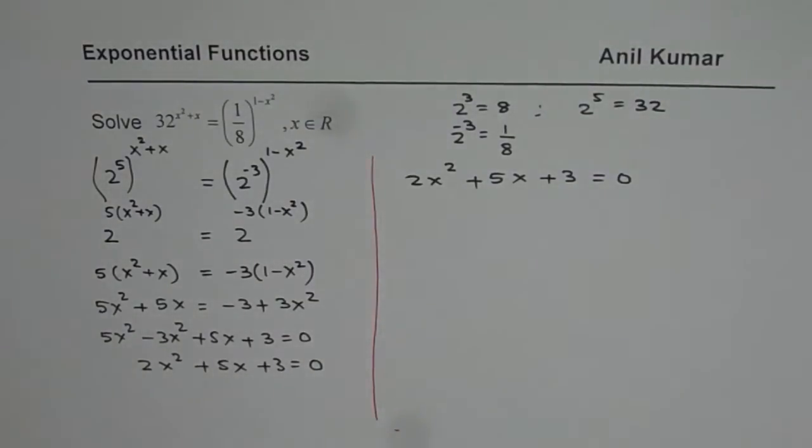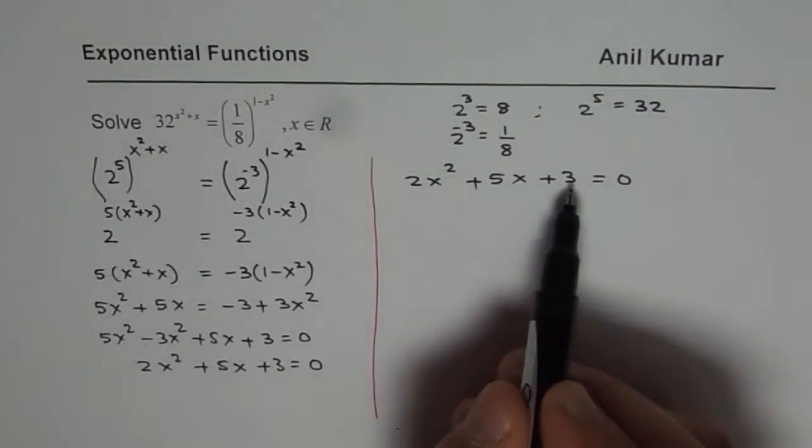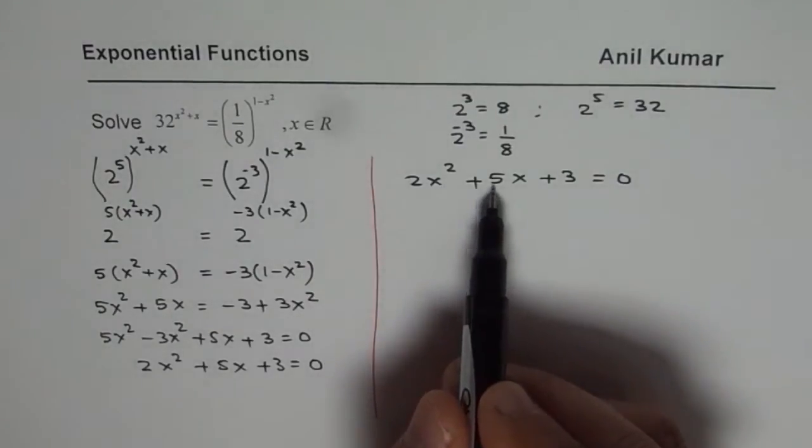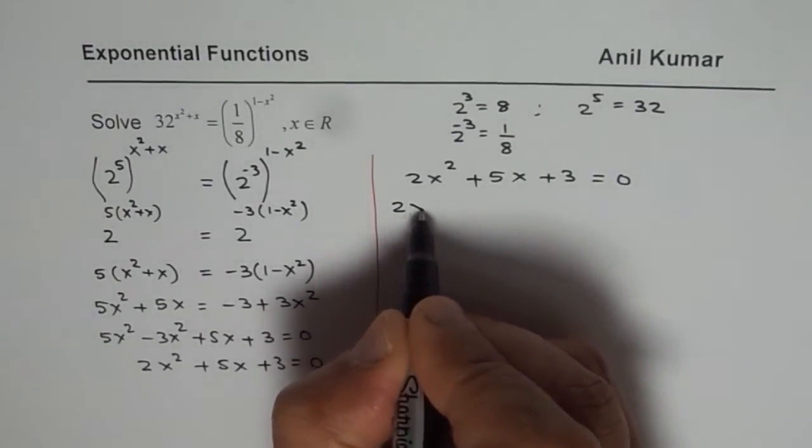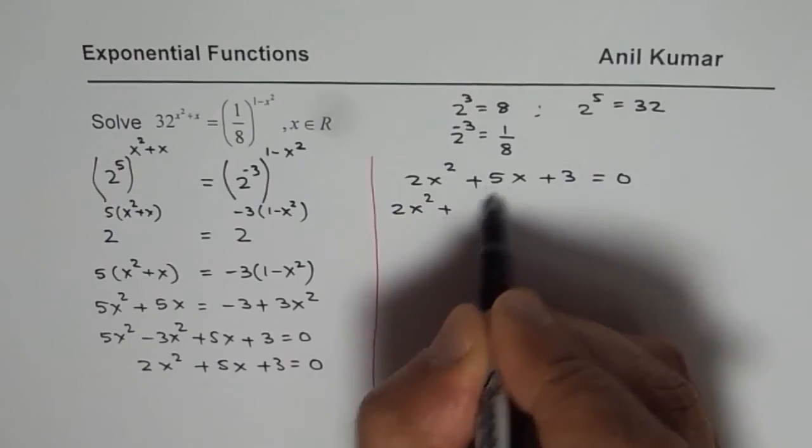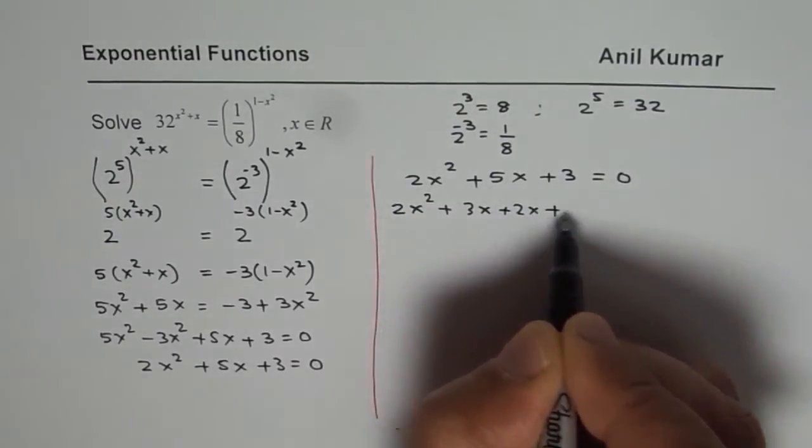You can use quadratic formula to solve this. You could also use your factoring techniques. 2 times 3 is 6. So we need product of two numbers to be 6 and sum as 5. So we could write this as 2x square plus 3x plus 2x plus 3.